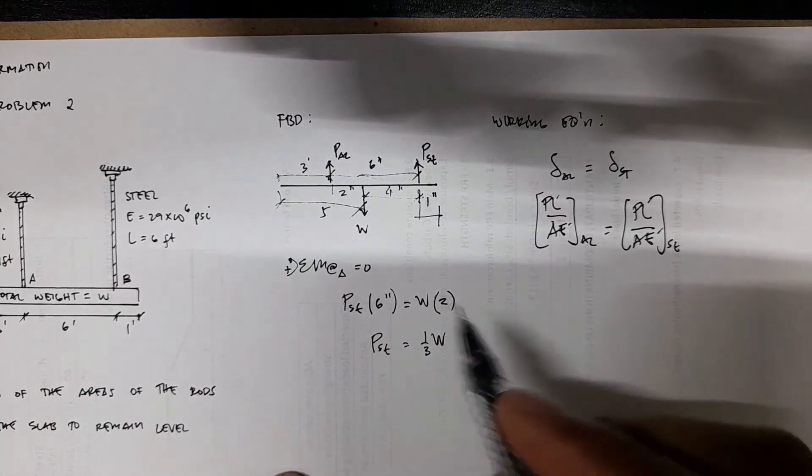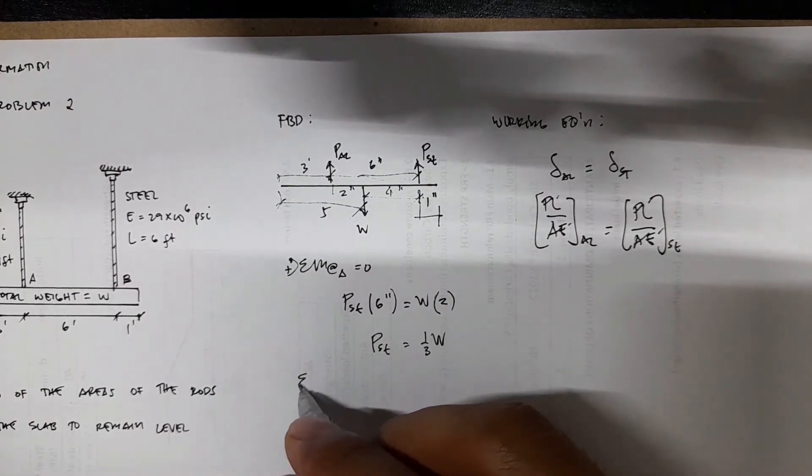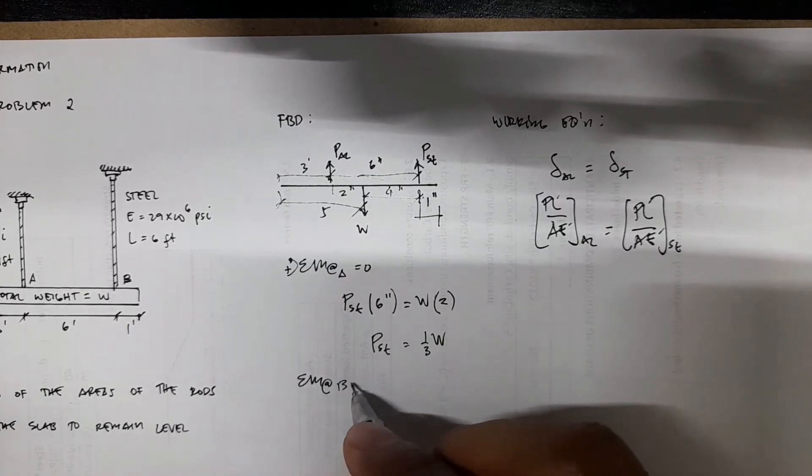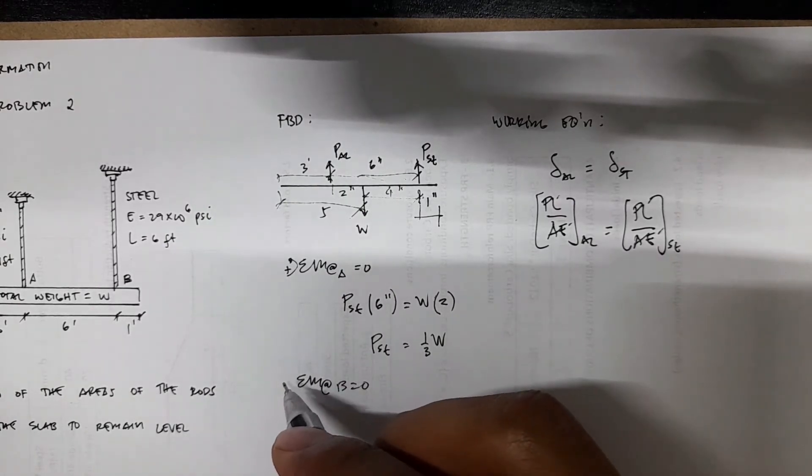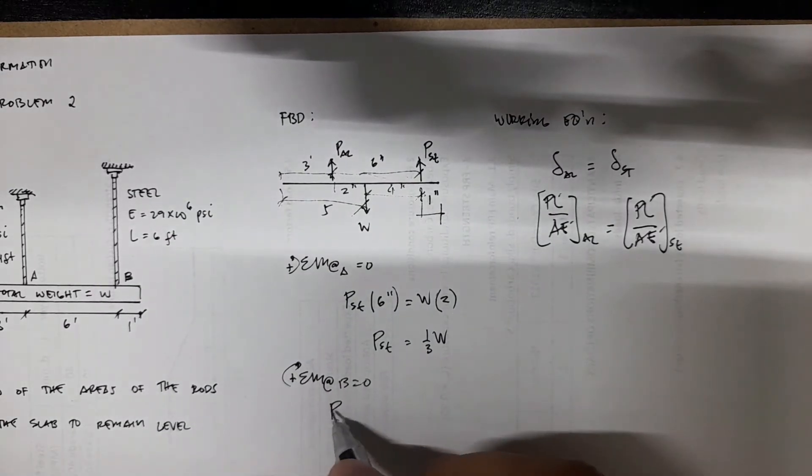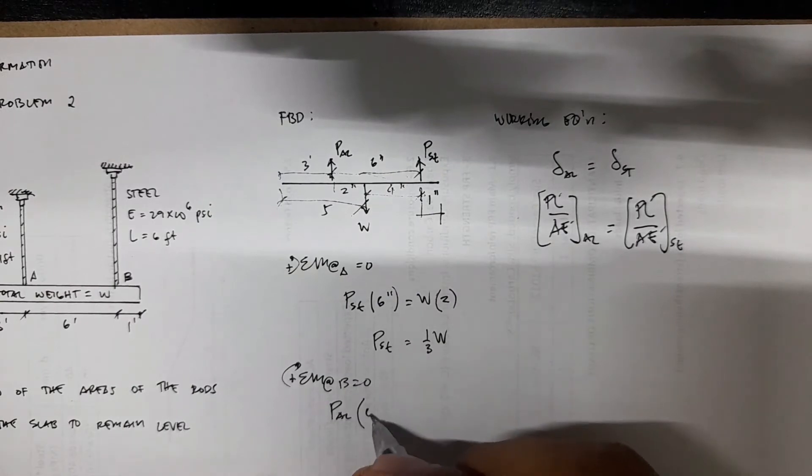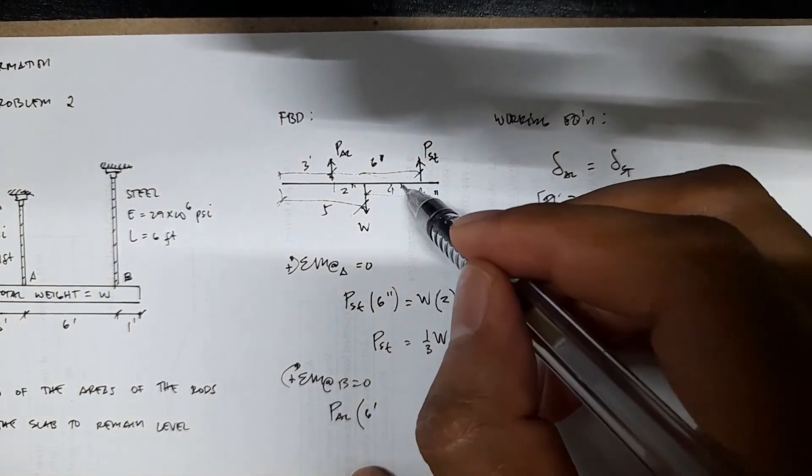In terms of W, we can also do summation of moments at B equals 0. This time, taking clockwise as positive, we have P aluminum times this 6 inches—actually 6 feet.